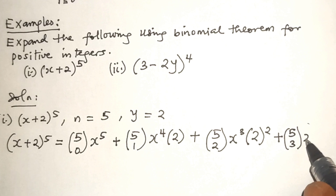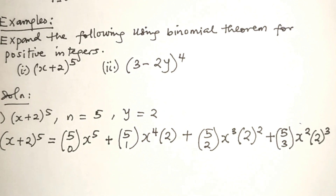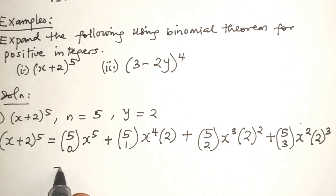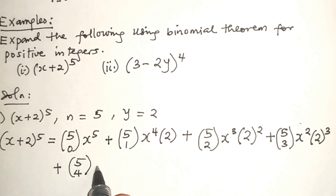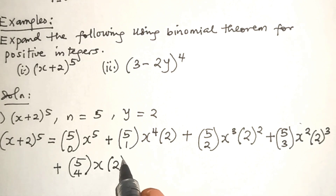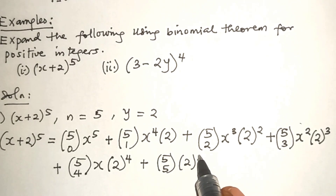Continuing: multiplied by 2 squared, plus 5-choose-3 times x to power 2 multiplied by 2 to the 3rd power, plus 5-choose-4 multiplied by x multiplied by 2 to the power 4, plus the last term, 5-choose-5 times 2 to the power 5.